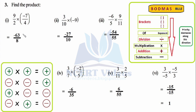Applying the multiplication rule: same signs give plus, different signs give minus. Part 1: 9 × 7 = 63. Part 2: 9 × 3 = 27; plus × minus = minus, so −27/10. Part 3: 6 × 9 = 54; 11 × 5 = 55; plus × minus = minus, so −54/55. Part 4: 1 × 3 = 3; 7 × 5 = 35; plus × minus = minus, so −3/35. Part 5: 3 ÷ 11 × 5 = 15/55, all positive.